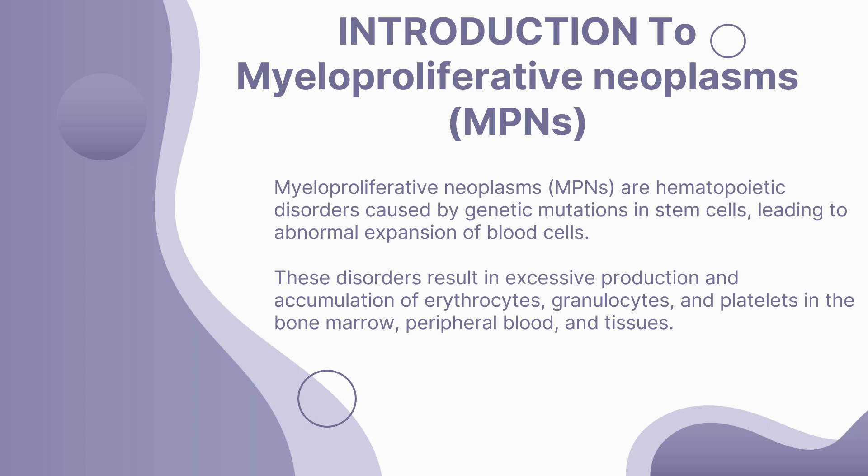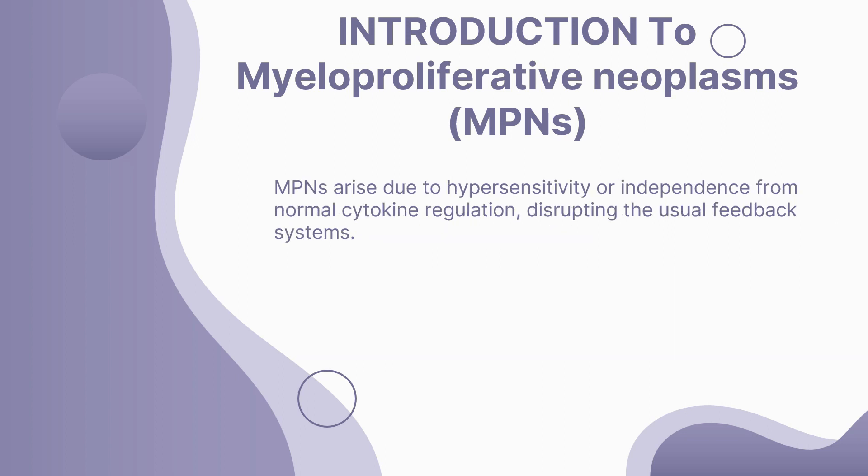These disorders lead to the abnormal expansion of blood cells, including erythrocytes, granulocytes, and platelets. They disrupt the balance of blood cell production in the bone marrow, peripheral blood, and even tissues. The development of MPNs is often due to genetic mutations that make stem cells hypersensitive or independent from normal cytokine regulation, disrupting the usual feedback systems.